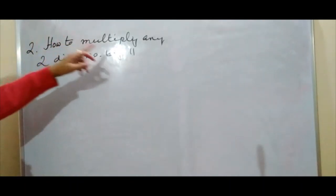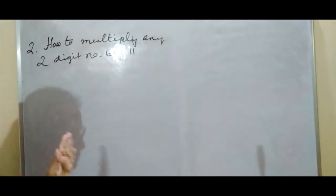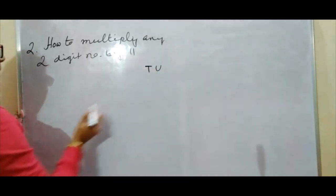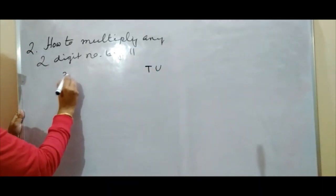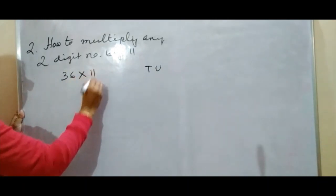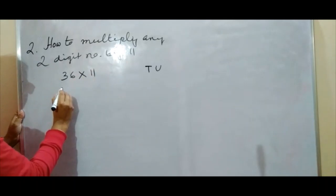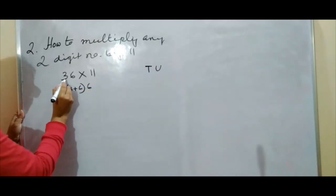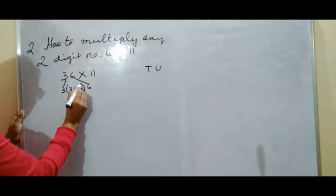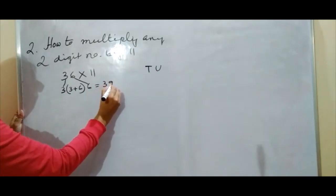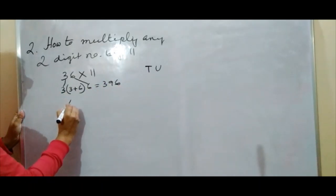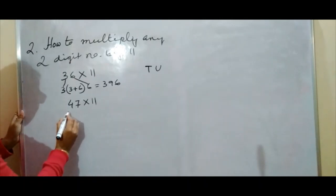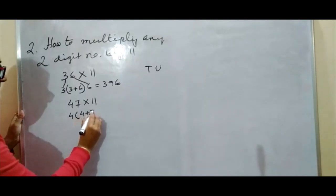Trick number 2: how to multiply any 2-digit number by 11. Any 2-digit number has a units place and a tens place. Suppose we take the number 36. For 36 × 11: first write 3, then in the middle write 3 + 6, then write 6 at the end. So the answer is 396. Isn't it simple?